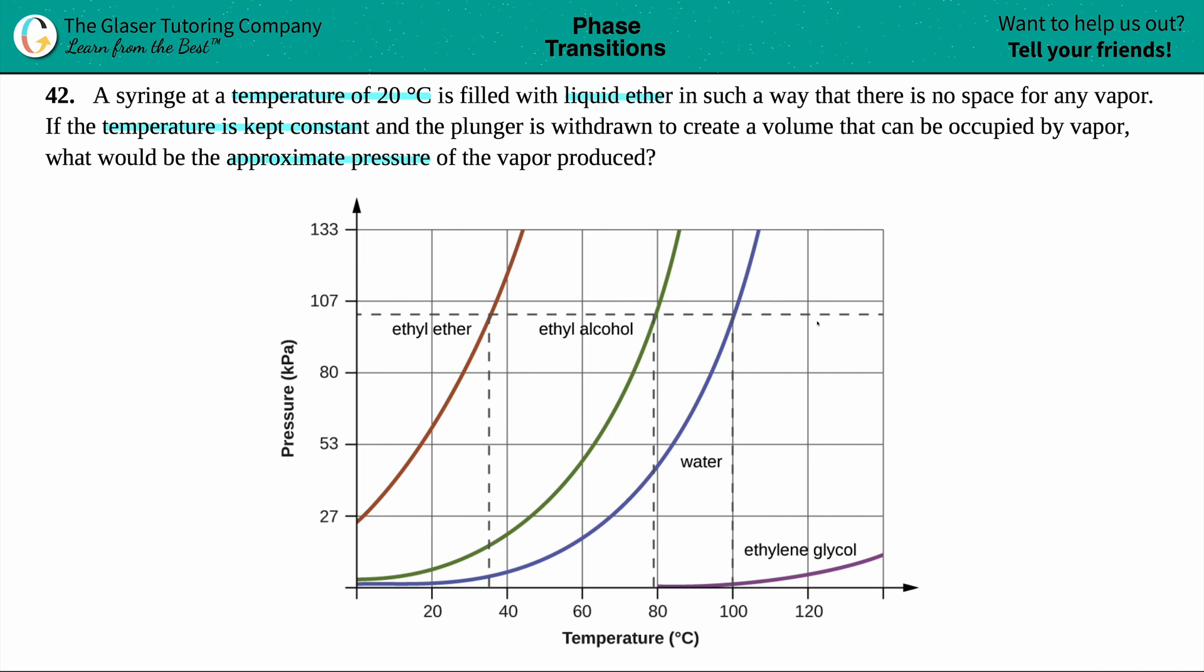Okay, so basically here they gave us a starting temperature of 20 degrees Celsius. And from there, if vapor was allowed to be made that could be occupied by vapor, they just want to know what the corresponding pressure is going to be if that temperature is kept constant at 20 degrees Celsius.